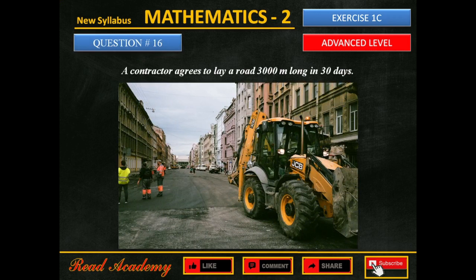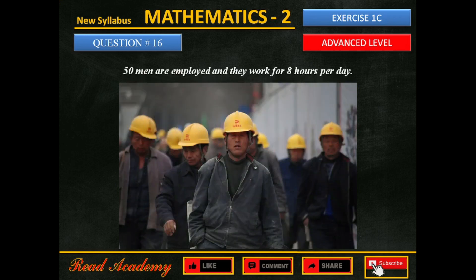A contractor agrees to lay a road 3,000 meters long in 30 days. 50 men are employed and they work for 8 hours per day.